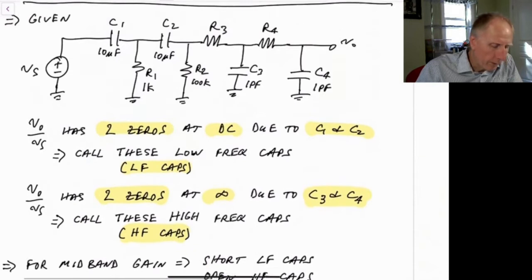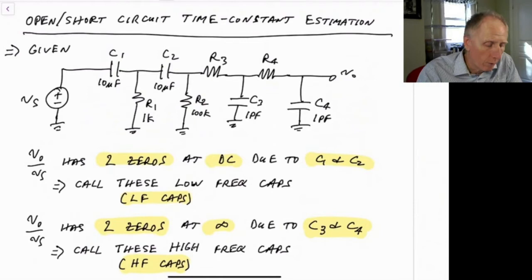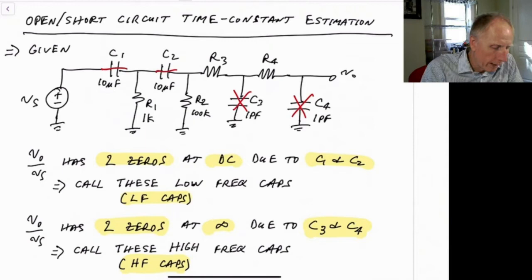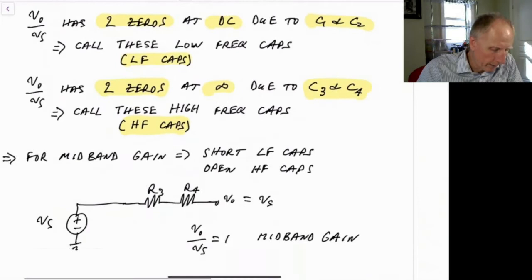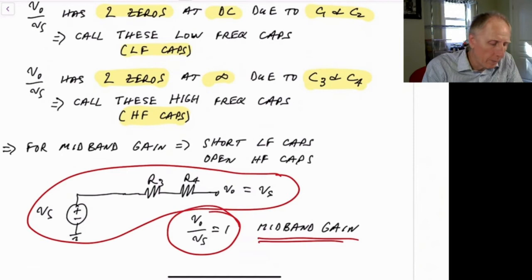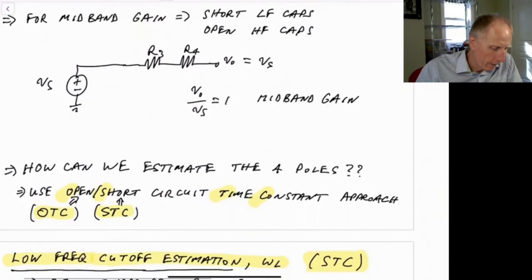At mid-band — below the high frequency cutoff and above the low frequency cutoff — the low frequency caps look like short circuits and the high frequency caps look like open circuits. So we have this circuit in the mid-band region. We're driving R1 and R2 directly so we can ignore them, and we really just have R3 and R4 in series. So Vout over Vs equals 1, giving a gain of 0 dB at mid-band frequencies, not at DC and not at high frequencies.